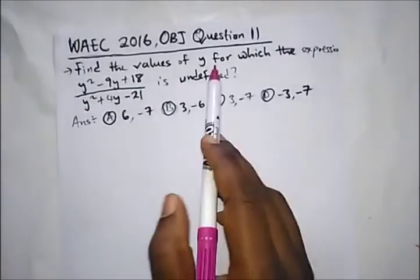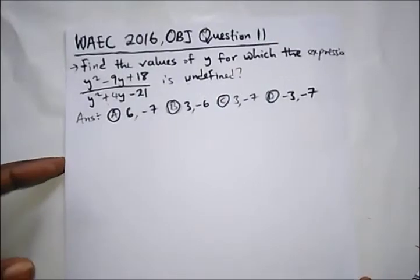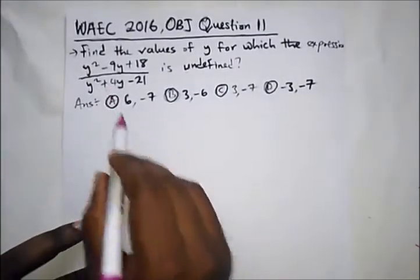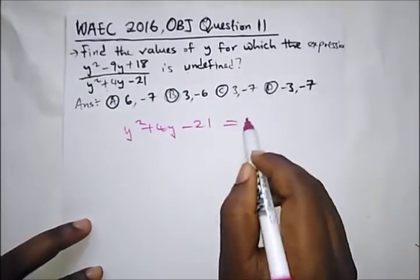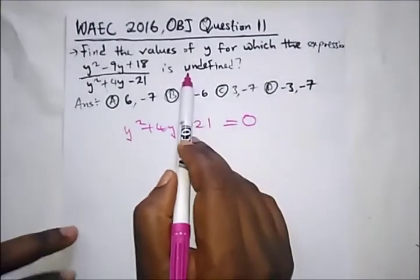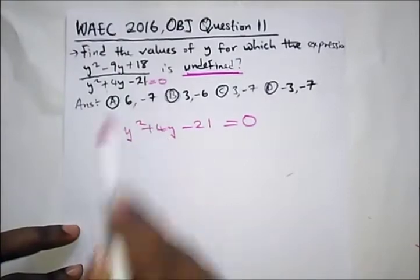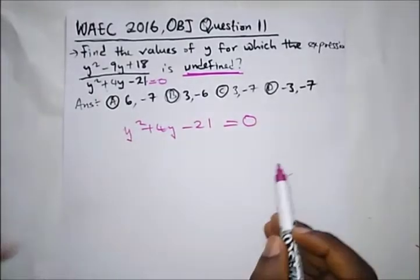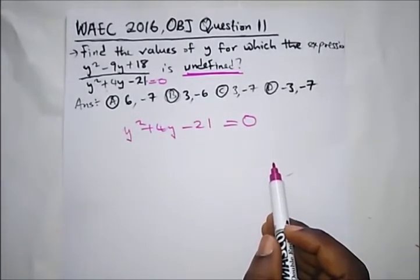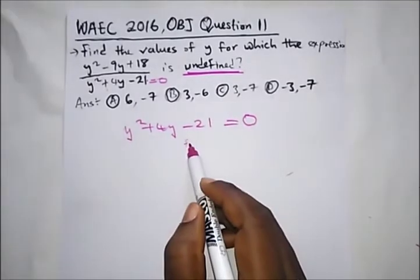WAEC 2016 OBJ question 11: find the values of Y for which the expression is undefined. When they say an expression is undefined, it means the denominator — which is Y² plus 4Y minus 21 — is equal to zero. Don't let the word 'undefined' confuse you; it just means the denominator equals zero. We need to factorize and find the values of Y.